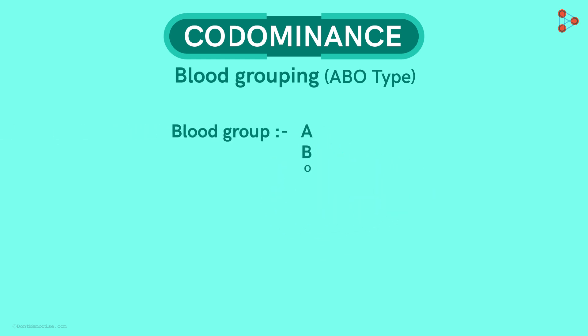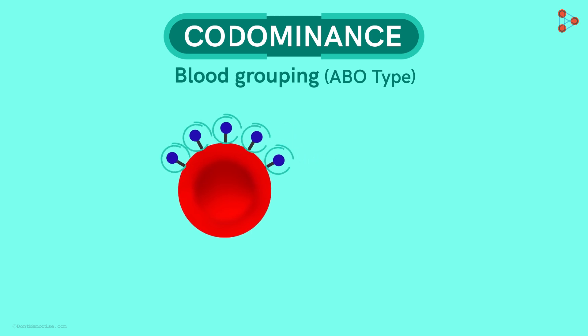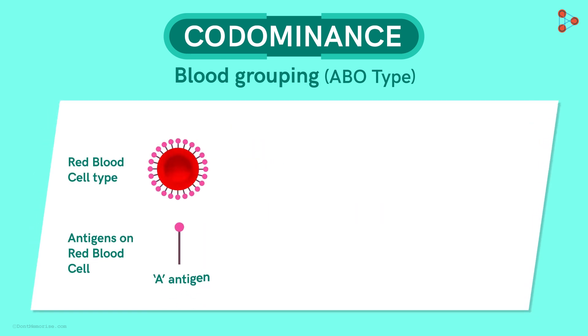Now let's say this is a single red blood cell. There are various components attached to its surface which are called antigens. These can be long chains of proteins or sugars. Now in the case of the blood grouping system, the different groups are classified on the basis of these antigens. So if the RBC has an A antigen, then the blood group is A. Similarly, presence of B antigen categorizes the blood group as B.